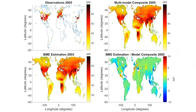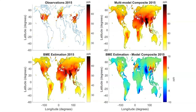For the year 2005, the top two figures show the observations and the multimodel composite; the bottom left shows the BME estimation combining observations and models; and the bottom right shows the difference — areas in red where output is higher than the composite, in blue where lower. For 2015, when China data is available, you can see a lot of correction in the difference plot because the models were not able to predict that variability, but by adding observations we better capture it.